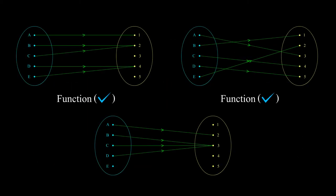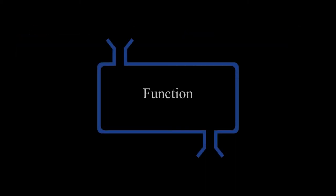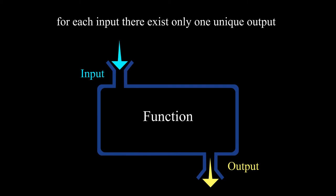You can visualize more looking at these diagrams. To understand function in simple language, we can take it as a box which gives unique output for each input. That is, for each input which is nothing but the element of domain, there will be one and only one output which is basically the element of codomain.